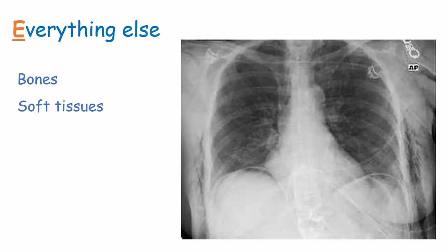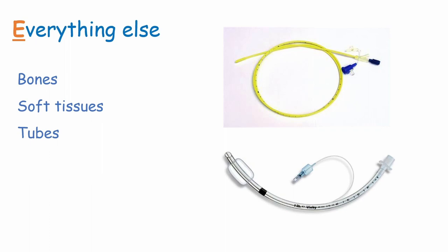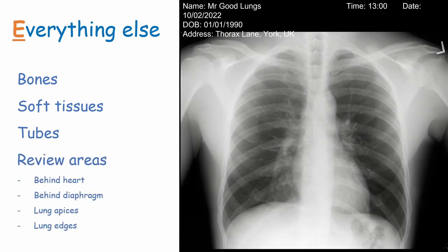To finish off our chest X-ray interpretation, we also need to check everything else. This includes bones for any fractures, soft tissues for things like surgical emphysema (which is air in the soft tissue), tubes such as nasogastric tubes or endotracheal tubes, and finally review areas. Review areas are a reminder to check the lung field behind the heart and diaphragm, and also to double check the lung apices and edges.